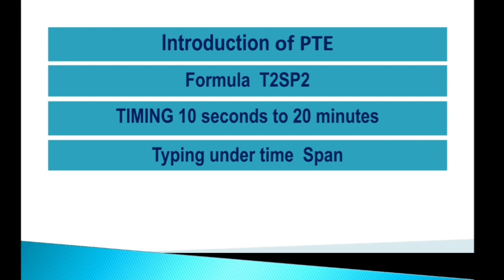The second T is for Typing. If your typing speed is not up to the time limit given to you, it is hard to score. For example, in essay writing, majority of students use templates but still are not able to complete the task within 20 minutes. Due to lack of typing speed they cannot complete it on time. So Typing and Timing — T2 — play a very crucial role.